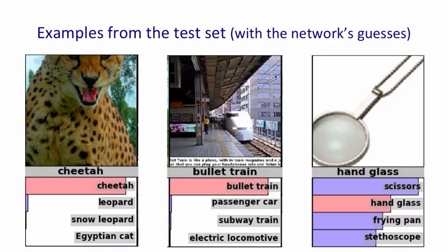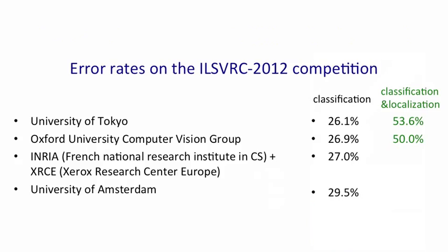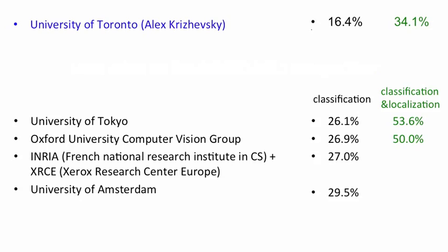How did the systems do on this data? The best computer vision systems are all very similar to each other: the University of Tokyo got 26.1%, Oxford University — possibly the best computer vision group in Europe — got in the 26% range, and the French National Research Labs and Xerox Research Center got 27%. You'd have guessed it would be hard to beat 26%. And then Alex Krizhevsky's neural net got 16% error — a huge gap. Normally in these competitions you don't see big gaps like that.